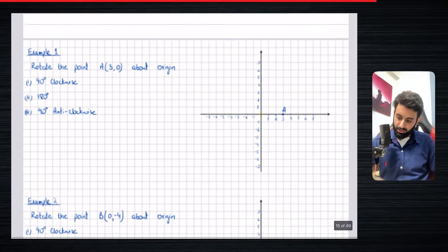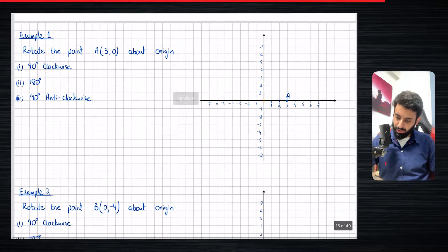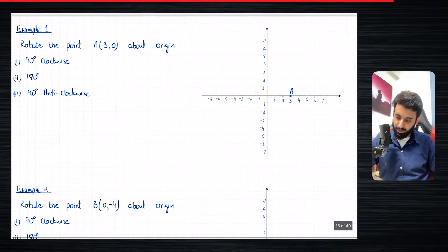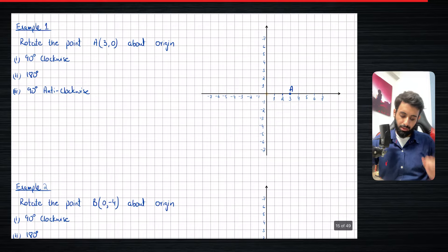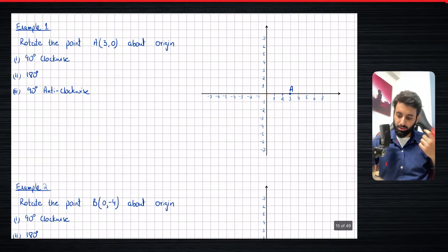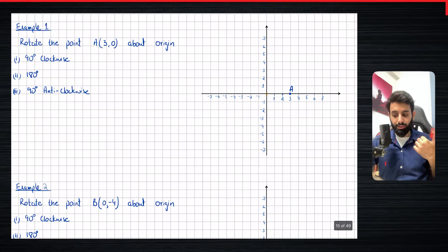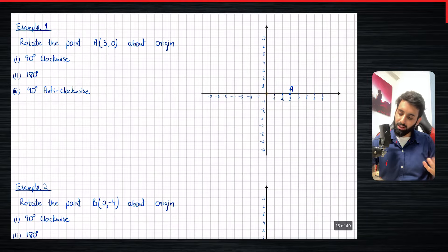Here's an example. We are going to be rotating the point A at (3, 0) — you can see I've written A on the grid here — about the origin. There are three parts to this question: first we'll rotate it 90 degrees clockwise, then 180 degrees, and then 90 degrees anticlockwise.